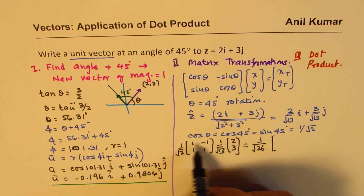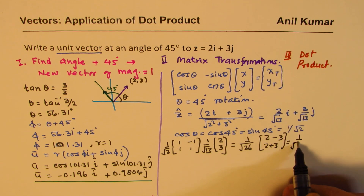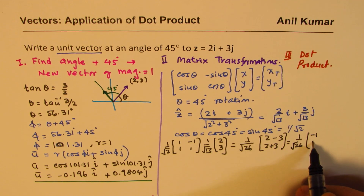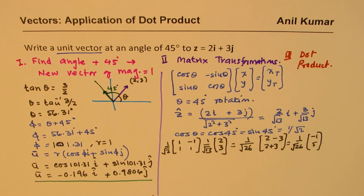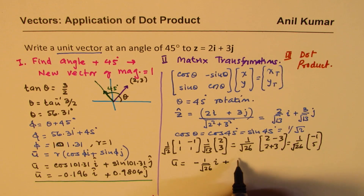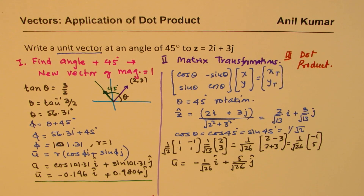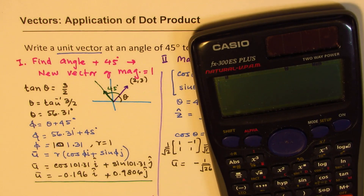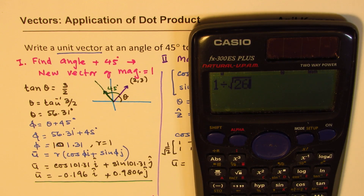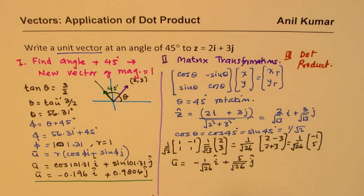Combining the terms, we get values of −1 and 5. So the unit vector u by the matrix method is: u = (−1/√26) î + (5/√26) ĵ. We can verify: 1/√26 in decimal is 0.1961 — exactly the same value as method one. So both methods give the same result.